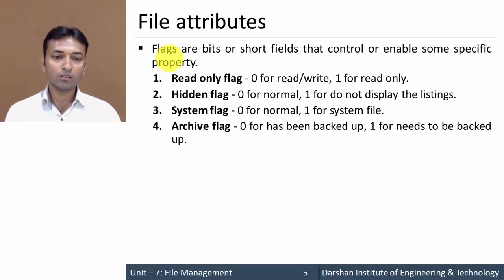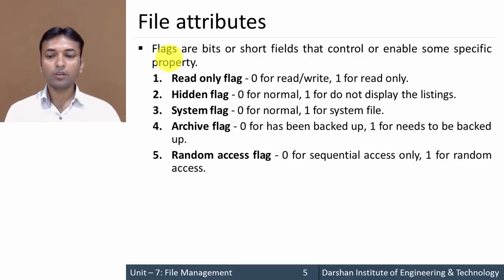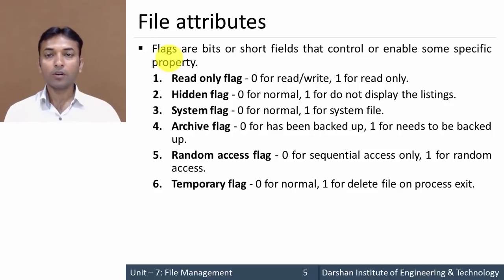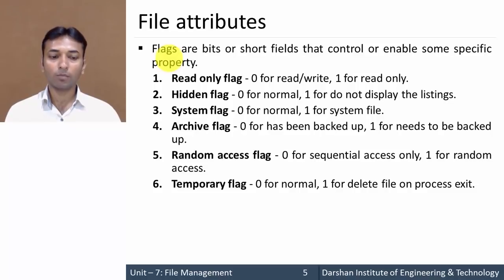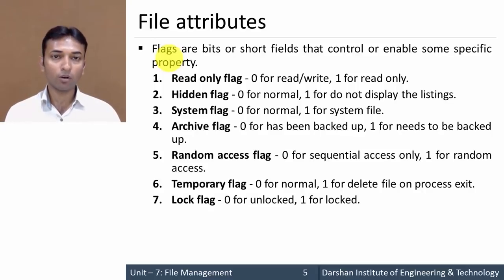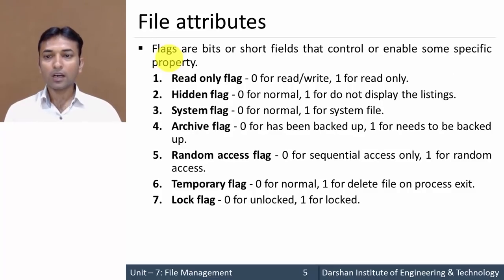The archive flag: value 0 means the file has been backed up; value 1 means it needs to be backed up. The random access flag: value 1 means the file is random access; value 0 means sequential access. The temporary flag: value 0 for a normal file; value 1 means delete the file on process exit. The lock flag: value 1 means the file is locked; value 0 means it is unlocked.